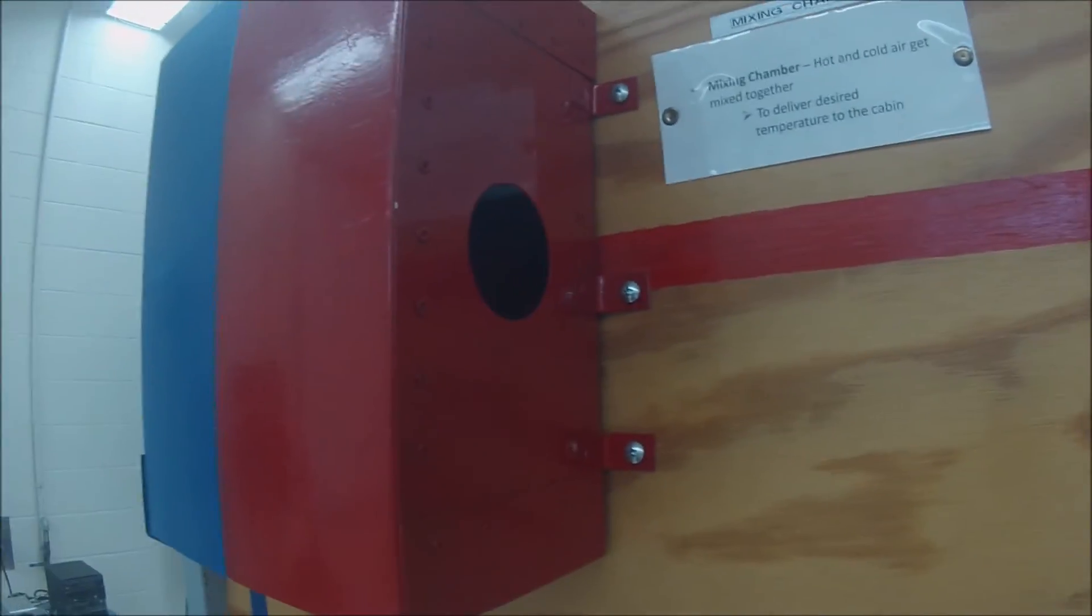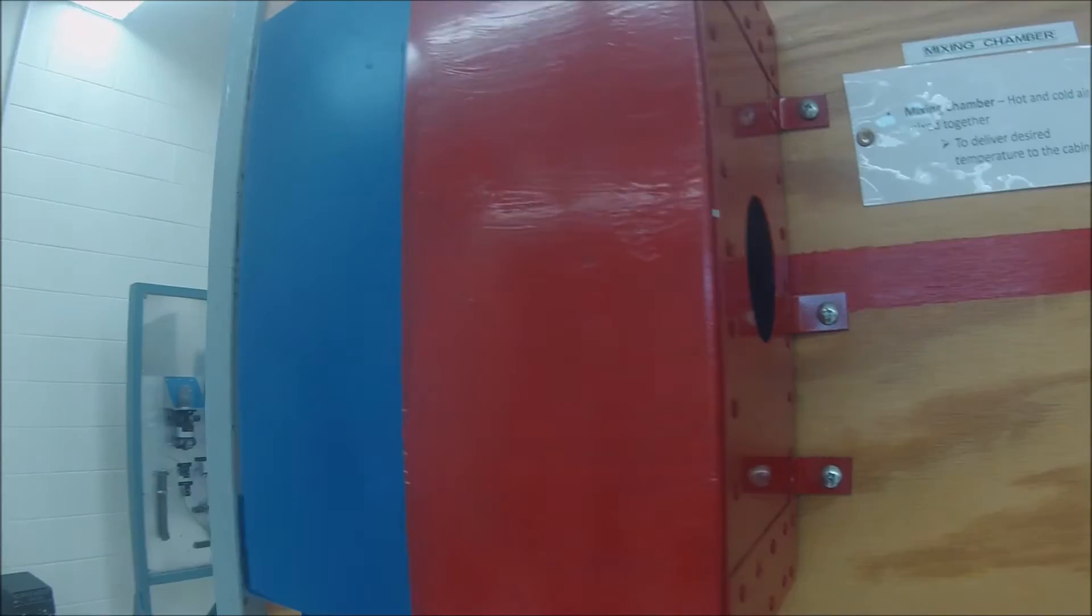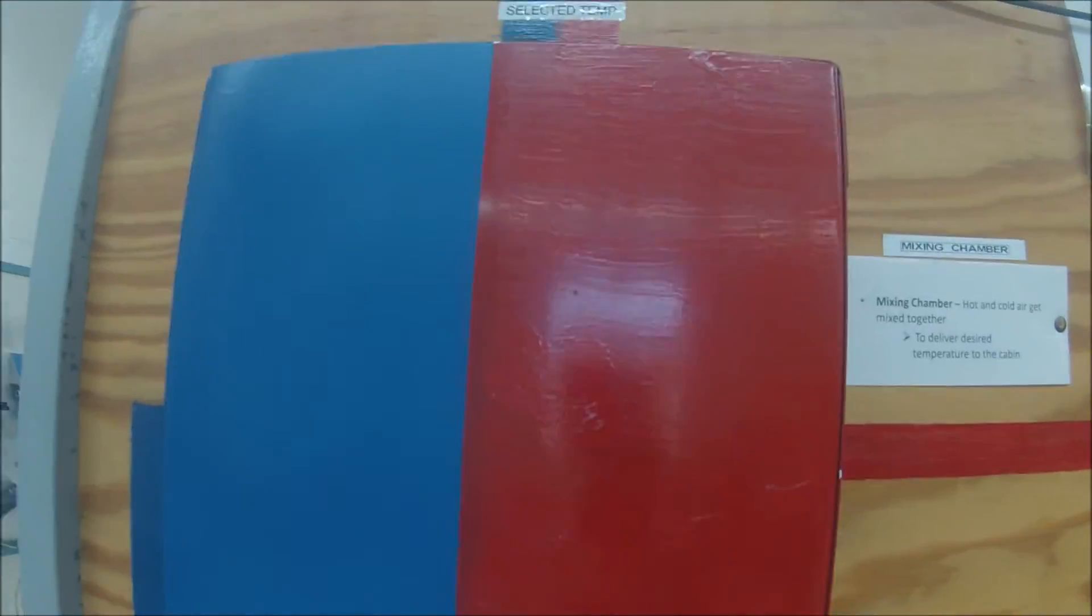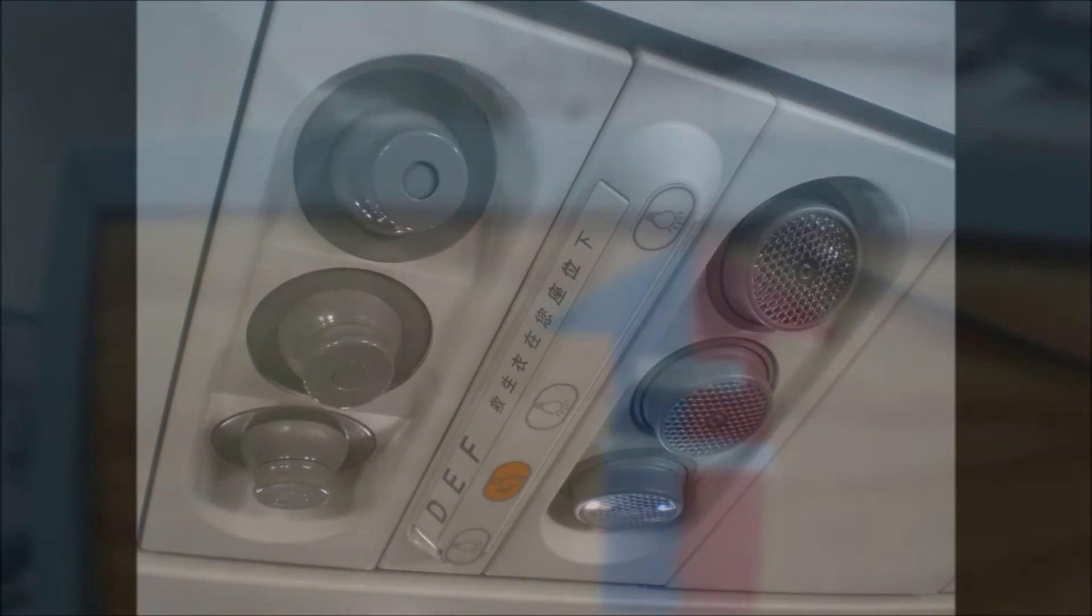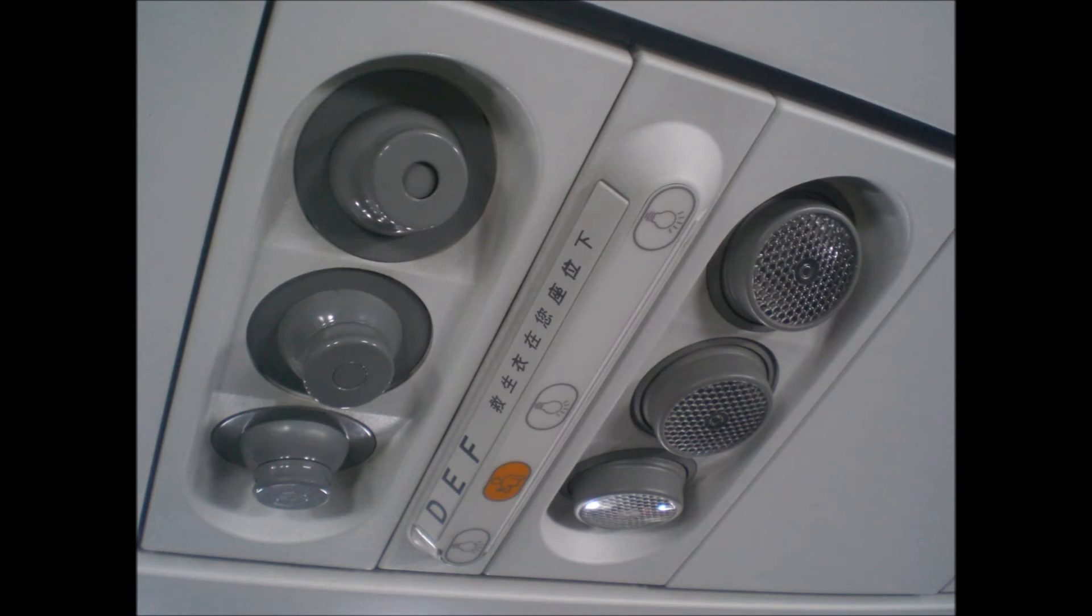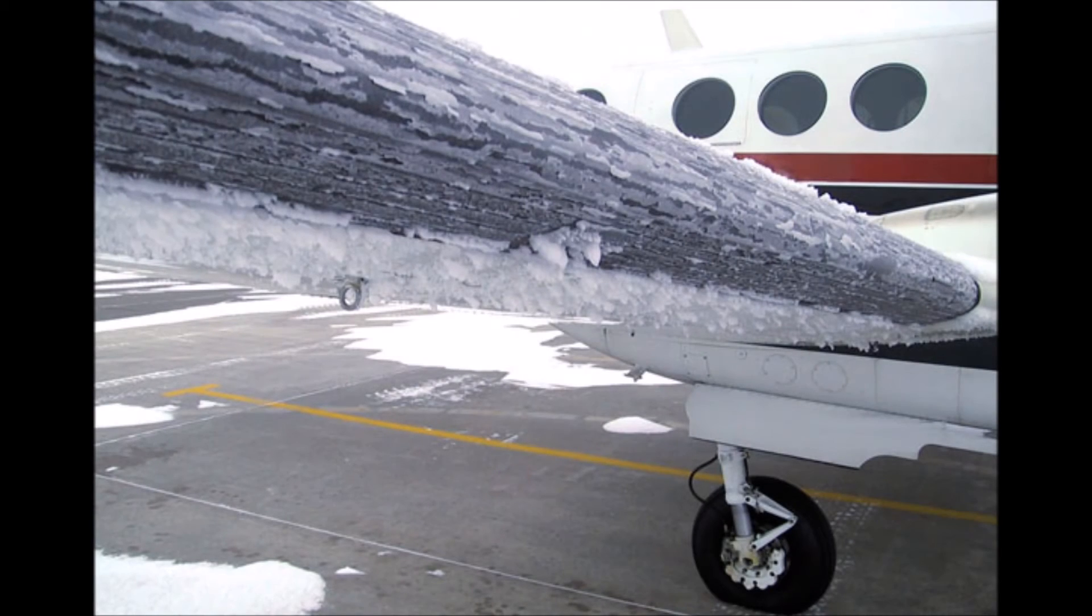After the air passes through the mixing chamber, it goes up and into many vents that supply the aircraft. These vents lead to the heating and cooling vents for the passengers. It also goes out to anti-ice on the wings as well as de-ice.